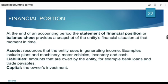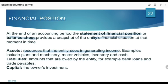Now it is about financial position. Accounting is said to be a language of business, toh aise mein jo bhi person is language ko understand karta hai, woh understand kar sakta hai what is the financial performance and position of the business. At the end of accounting period, the Statement of Financial Position — or balance sheet — provides a snapshot of the entity's financial situation at that particular date. Ismein financial position ko represent karne ke liye assets aur liabilities show ki jati hain. Asset is defined as resources that the entity uses in generating income — income generate karne ke liye jo bhi resources use ki jati hain, those are assets.